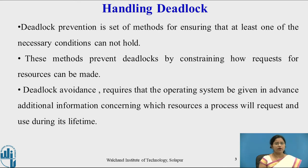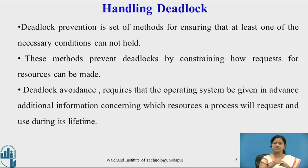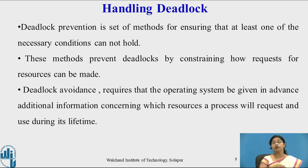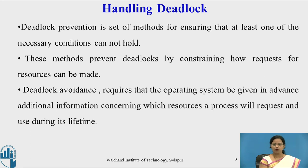In deadlock avoidance, the operating system must be given in advance additional information concerning which resources a process will request during its lifetime. Before starting execution of any process, that process must give additional information to the system about how many resources it is going to request and use during its lifetime. The system must have prior knowledge for deadlock avoidance. For deadlock prevention, one of the conditions should not hold in the system.